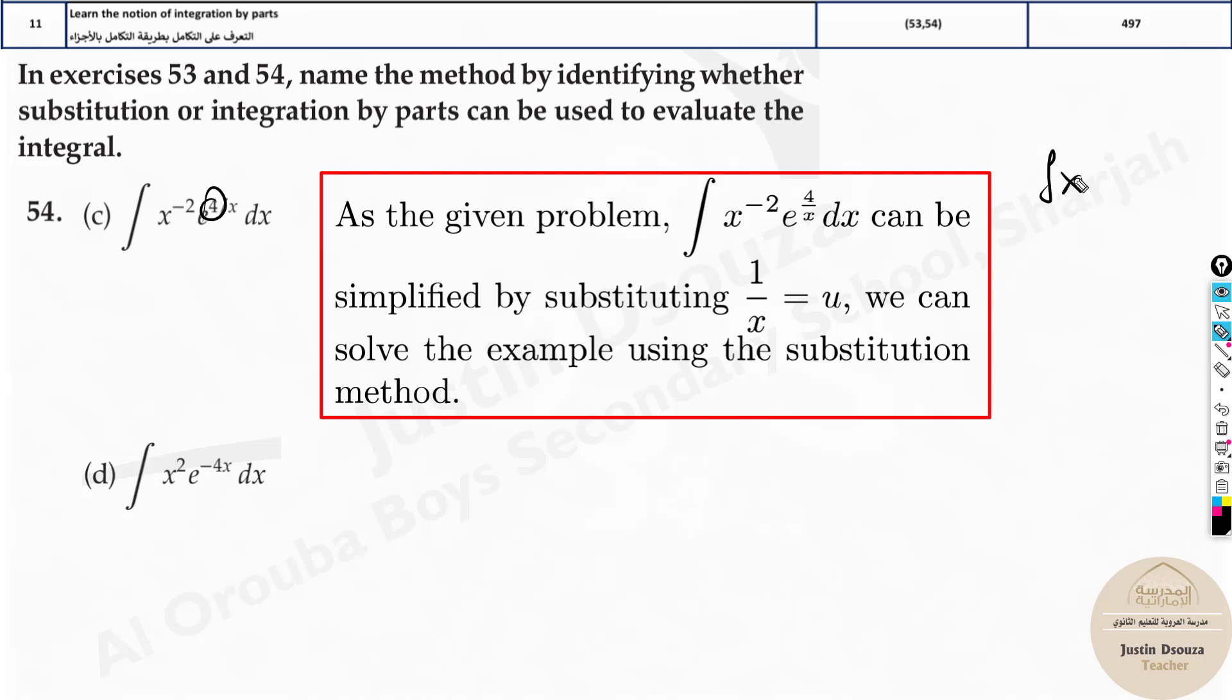Integral x minus 2, it will be e to the power 4u. And then dx will be du by x to the power minus 2. Then this cancels off and you will have integral e to the 4u du. Now you solve it up.